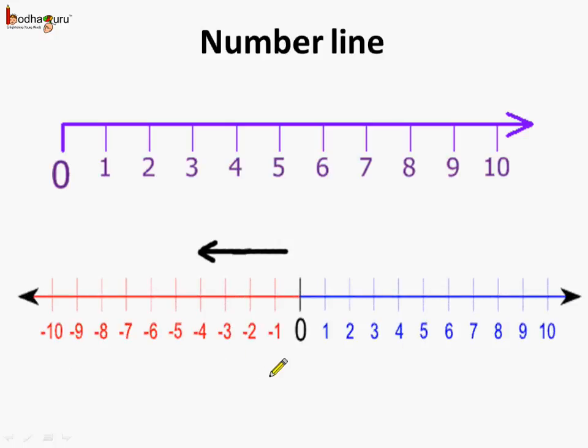So this is the number line which includes both the positive numbers which are on the right side and the negative numbers on the left side. So negativity increases on the left side, but the actual value of the number decreases.